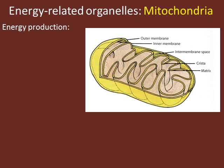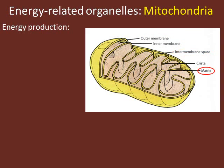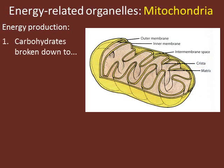Now let's consider the organelles associated with energy, starting with mitochondria. Mitochondria are responsible for producing an energy-rich molecule called ATP. The structures of mitochondria include the outer and the inner membrane — two phospholipid bilayers. The space in between these membranes is called the intermembrane space, and the innermost space inside that inner membrane is called the matrix. The inner membrane is highly folded, and those folds are called cristae.